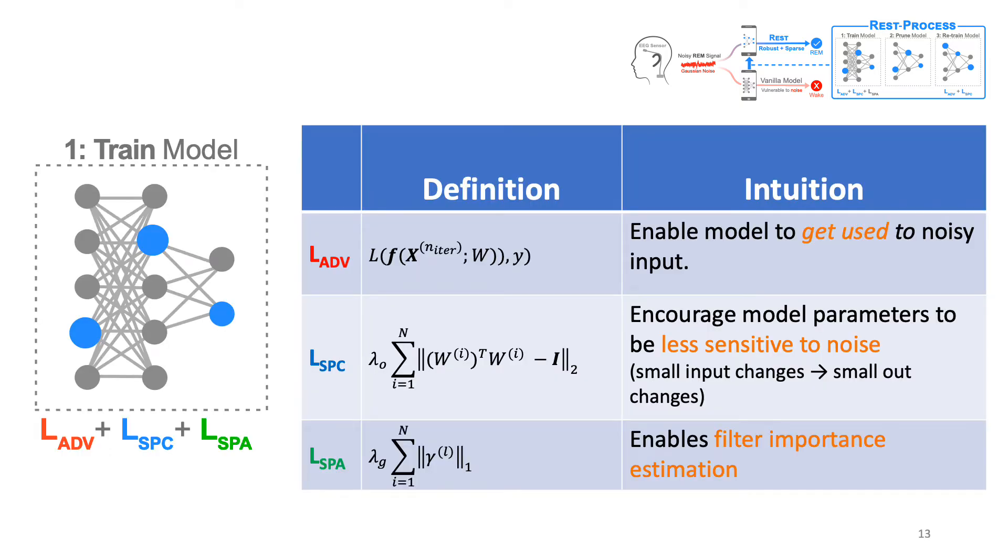Let us deconstruct each one of these steps further. In the first step, we outline that we have three loss functions. The red loss term is the adversarial loss term. The blue loss term is the spectral loss term and the green loss regularization is the sparsity regularization.